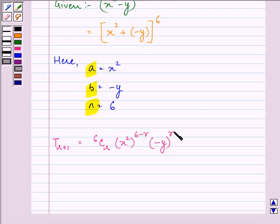That is it can be written as negative 1 raised to the power r, 6Cr multiplied by x raised to the power 12 minus 2r, multiplied by y raised to the power r.